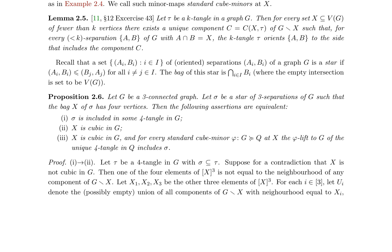Proposition 2.6 states that for a three-connected graph G, a star of three-separations sigma with a bag X of four vertices is included in some four-tangle in G if and only if X is cubic in G, and for every standard cube minor phi from G to Q at X, the phi-lift to G of the unique four-tangle in Q includes sigma. This proposition is proven by showing that each condition implies the others through a series of logical deductions.